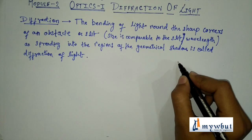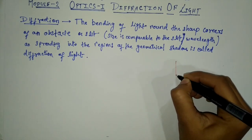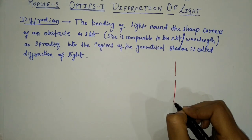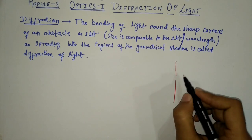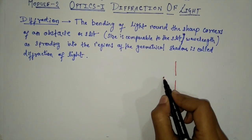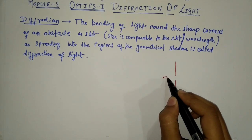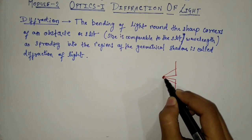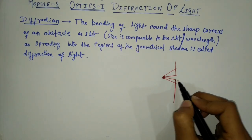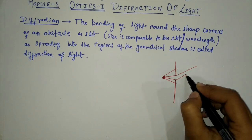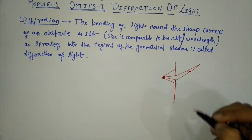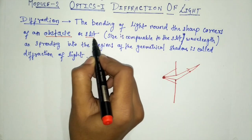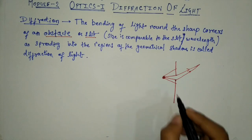If we consider a slit — a slit means a small gap in between any object — and if this is the source of light falling on the obstacle, remember this is an opaque obstacle, so by the sharp corners or sharp edges, light bends in this direction. This phenomenon is known as diffraction. That is why it is described for both an obstacle and a slit.